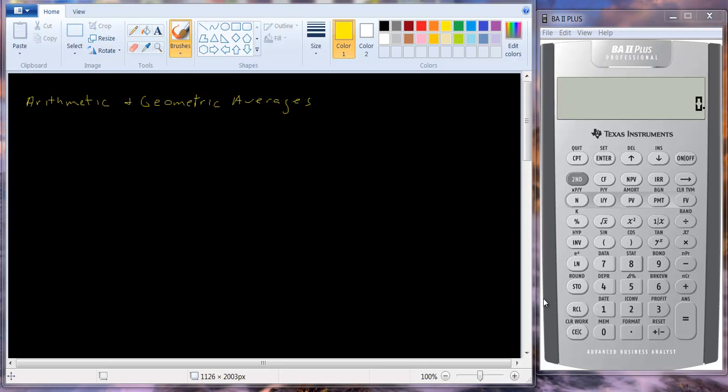I want to talk about arithmetic versus geometric averages. Now we compute averages all the time but there are a couple of different ways to compute them in finance and you're going to get somewhat different results.